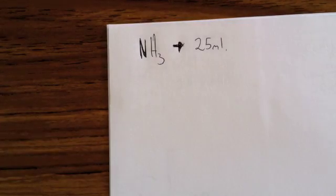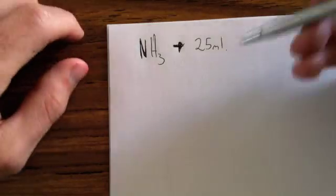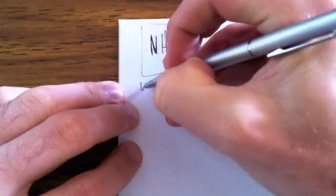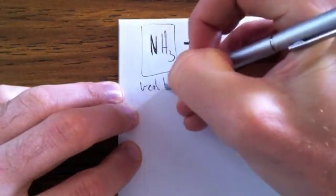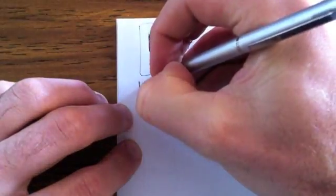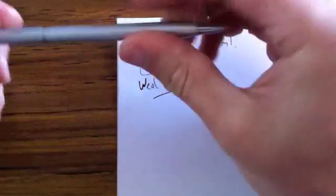All right, second example for back titrations. This one, we're working with ammonia, and ammonia is a weak base. Now, being a weak base, it doesn't have a nice end point, so therefore we need to do a back titration. Lo and behold, that's all good.